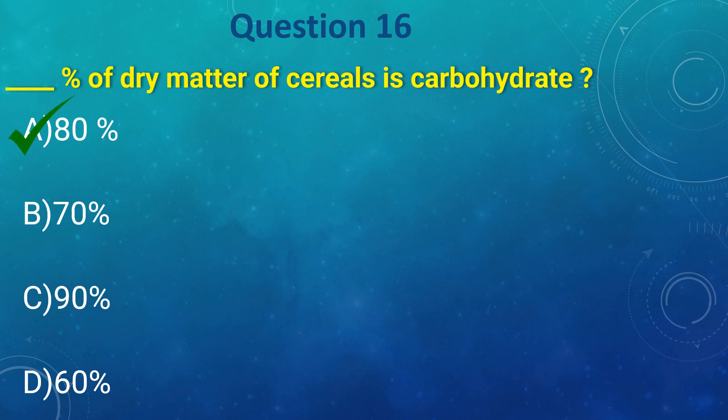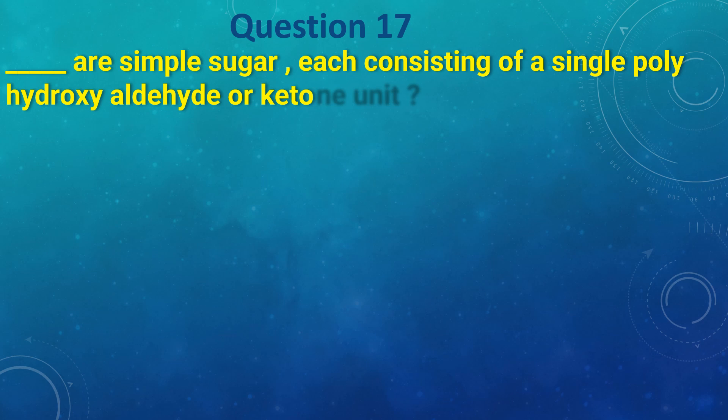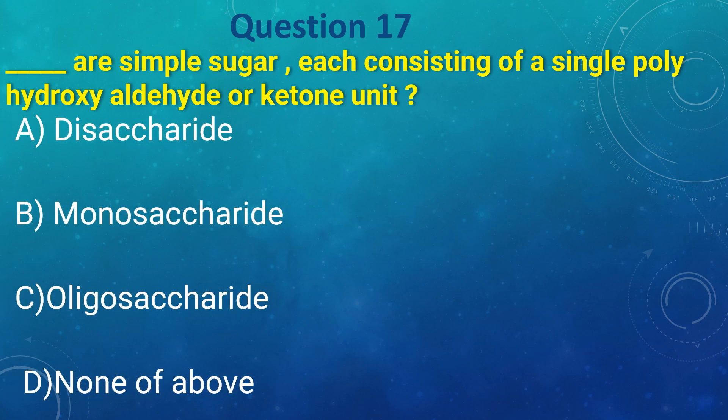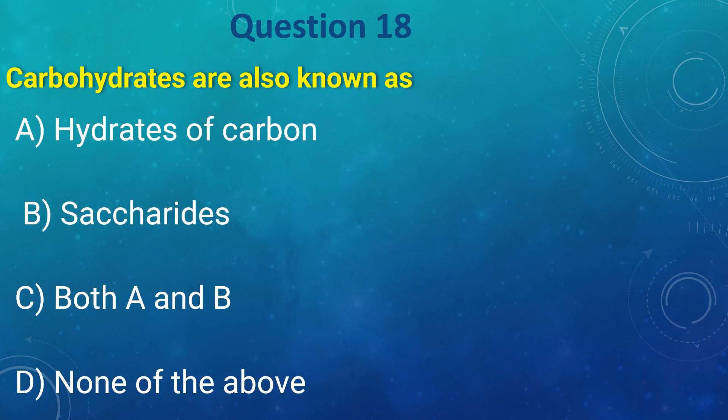_____ are simple sugars which consist of single polyhydroxy aldehyde or ketone unit: a) disaccharide, b) monosaccharide, c) oligosaccharide, d) none of these. The answer is monosaccharide. Carbohydrates are known as: a) hydrate of carbon, b) saccharide, c) both a and b, d) none of these. The answer is c) both a and b.